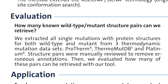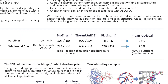We evaluated the tool based on known protein structure pairs consisting of wild type and the corresponding mutant. For this purpose, we used three thermodynamic mutation datasets for evaluation. We evaluated how many of these known structure pairs can be retrieved with our tool. We split the experiment into a baseline experiment that uses only the Ascona tool and does not perform a database search, and an experiment that uses the whole workflow.